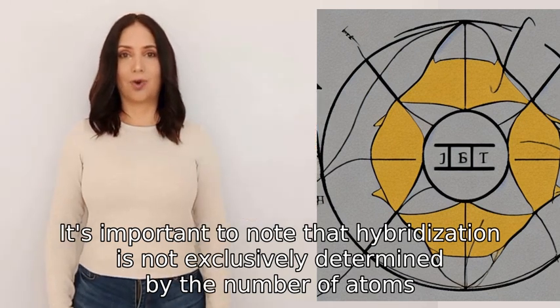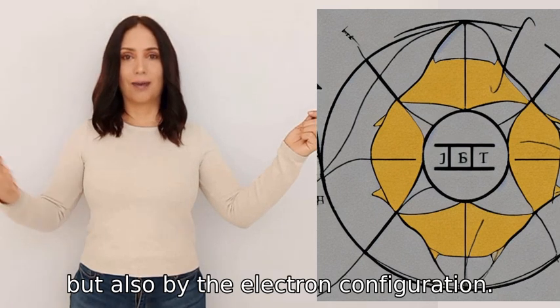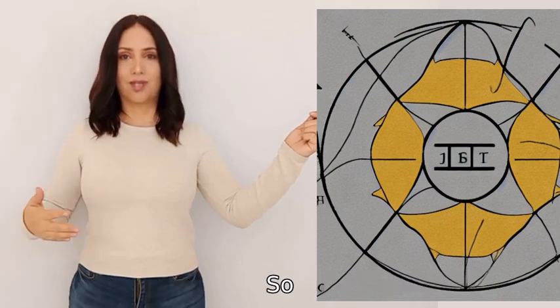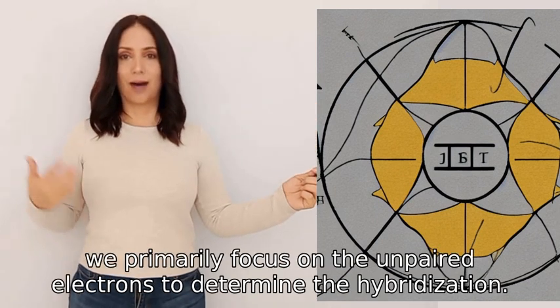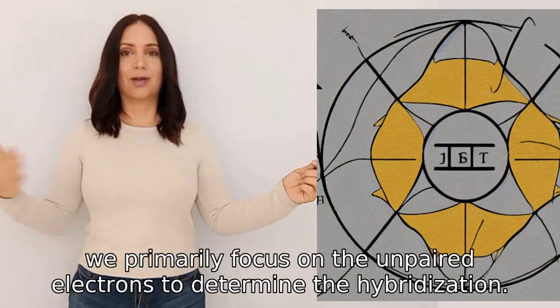So in the case of odd-numbered atoms, we primarily focus on the unpaired electrons to determine the hybridization.